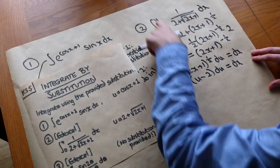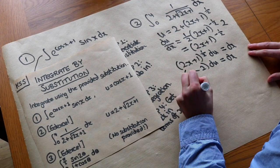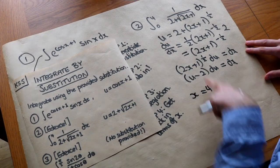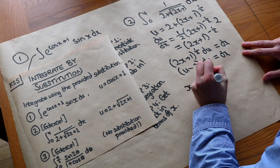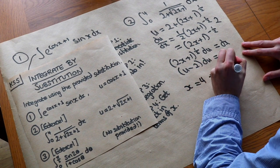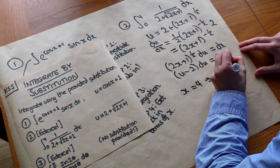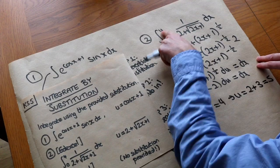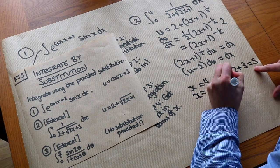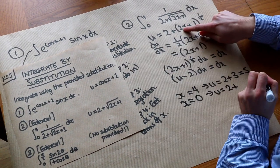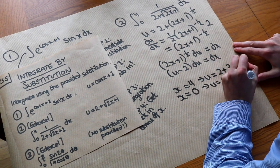Now we change the limits. When x equals 4: u equals 2 plus root(2 times 4 plus 1) equals 2 plus root 9 equals 2 plus 3 equals 5. So the top limit becomes 5. When x equals 0: u equals 2 plus root(0 plus 1) equals 2 plus root 1 equals 2 plus 1 equals 3. So the bottom limit becomes 3.